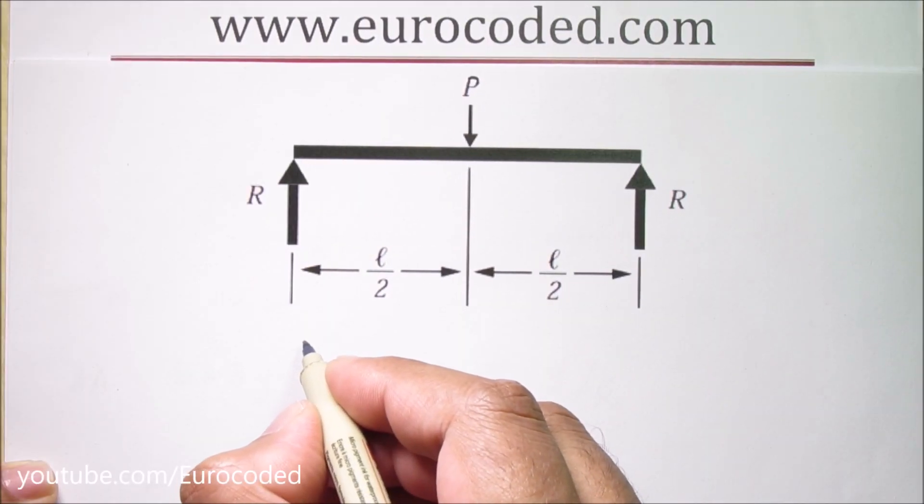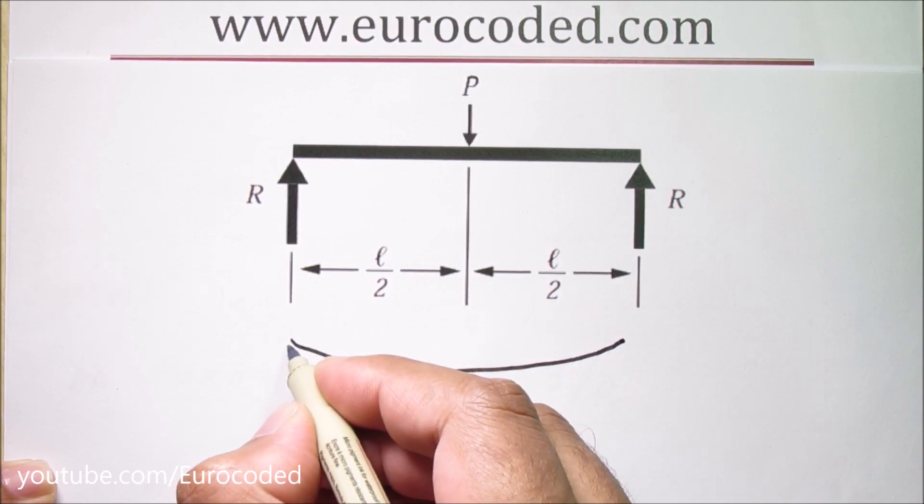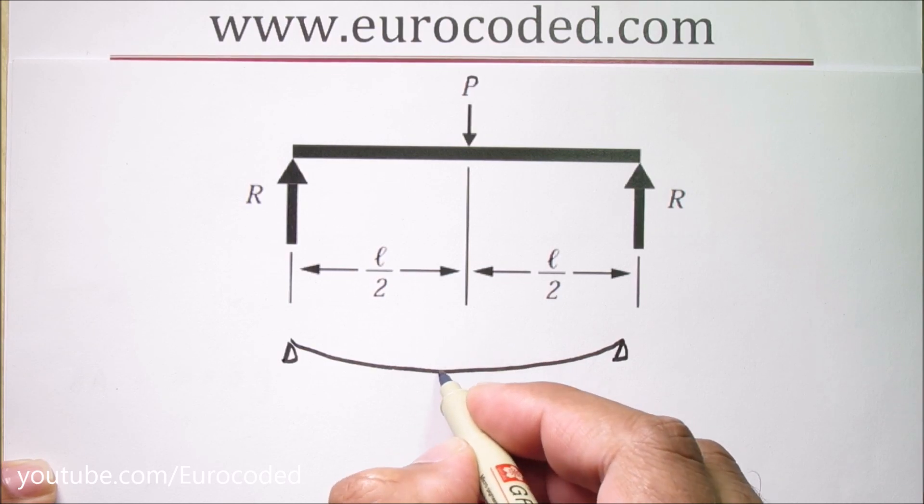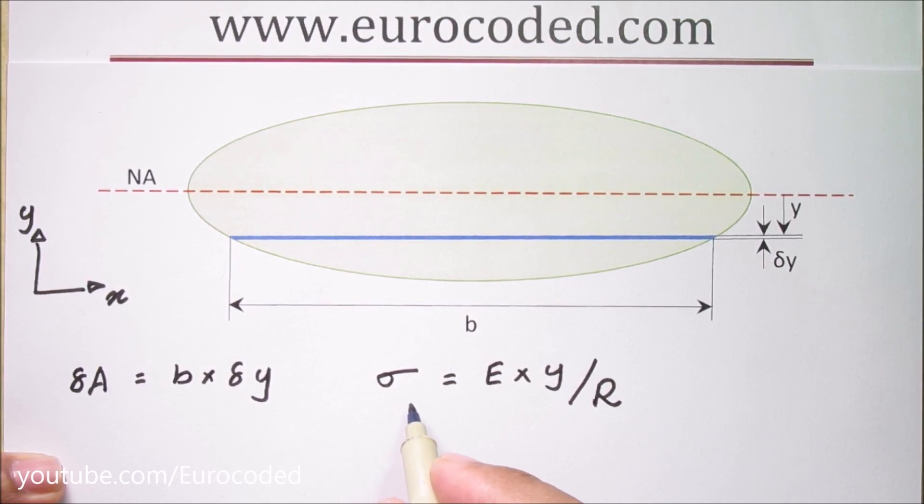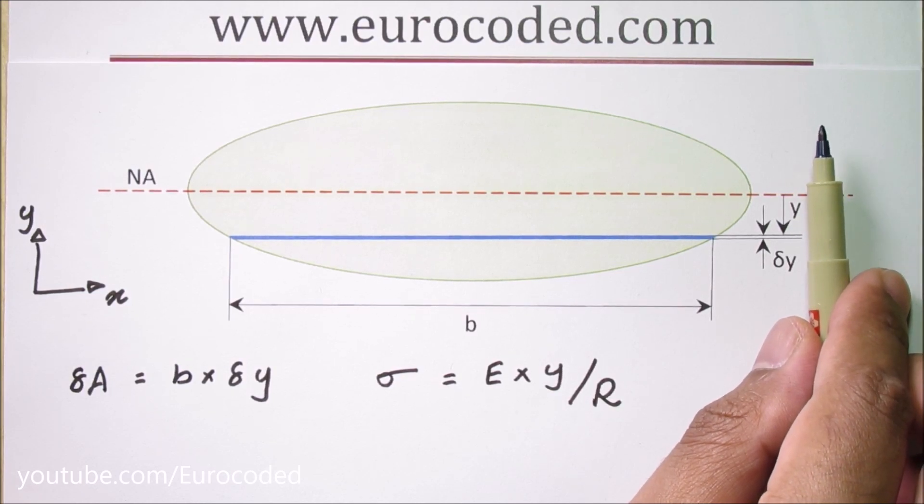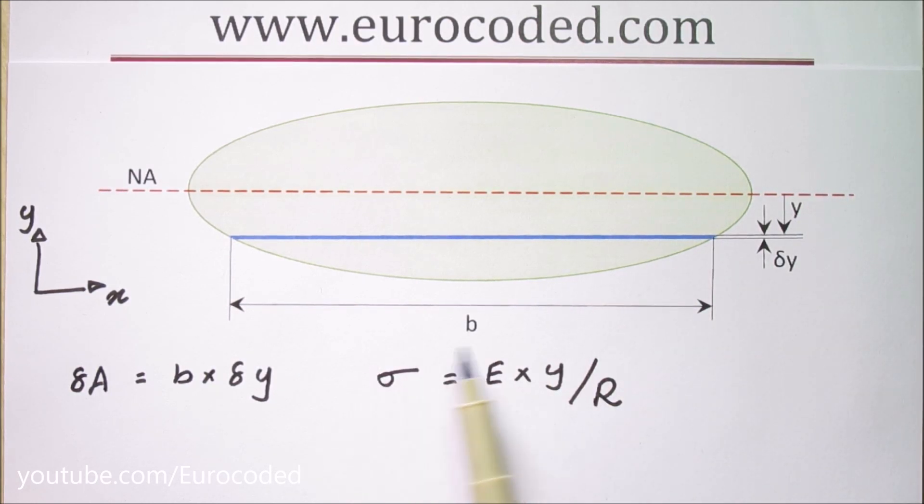If we look at the deformation of this beam it will be something similar to this and r is the radius of curvature in this beam. I have already covered how to develop this relationship between stress, strain and radius of curvature in a previous video. Please click on the youtube card here or follow the link in the description box below to that video if you would like to know more about this equation and how to derive it.